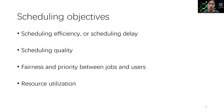In addition to the scalability challenge, the new scheduler should also achieve a good trade-off among various scheduling objectives. We focus on four things: first, scheduling efficiency or scheduling delay; second, scheduling quality, which means whether the resource preference of the task is satisfied; third, fairness and priority between jobs and users; and fourth, resource utilization.